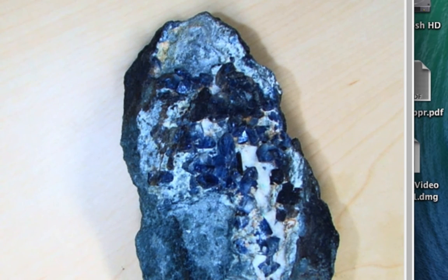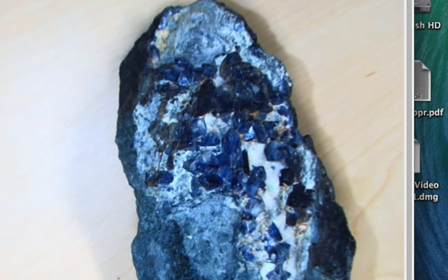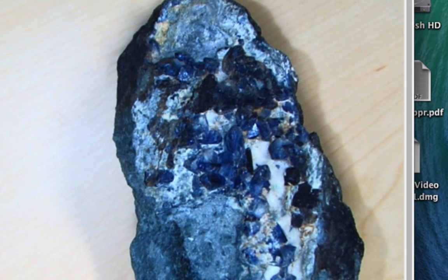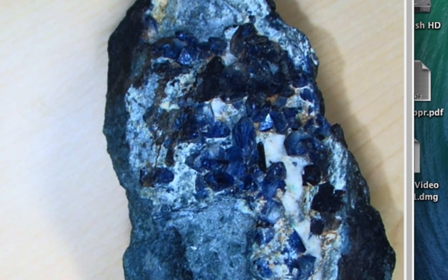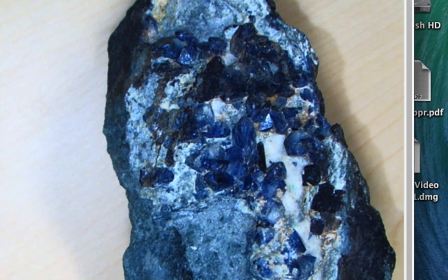Benitoite is a barium titanium silicate. If you look on eBay for Benitoite, it ranges in a variety of prices — it can be quite expensive. It's found in several places around the world, but only in California does it form nice gem quality crystals.